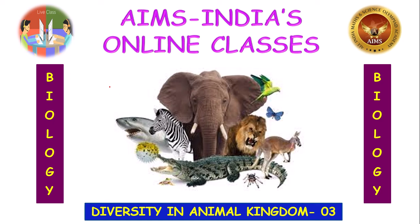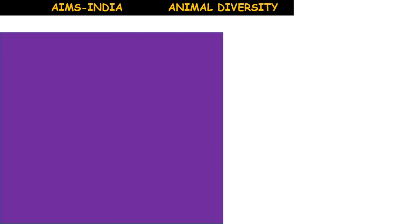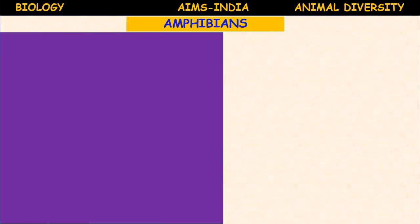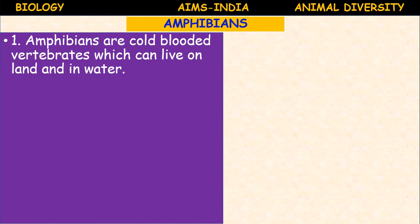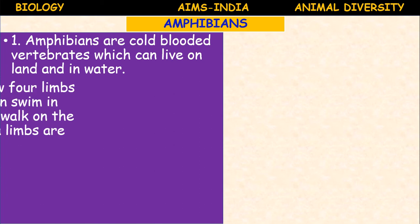After fishes, the Tetrapoda is divided into four classes: Amphibia, Reptilia, Aves, and Mammalia. Today we are going to discuss these. Amphibians are cold-blooded vertebrates which can live on land and in water.